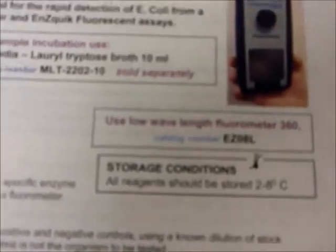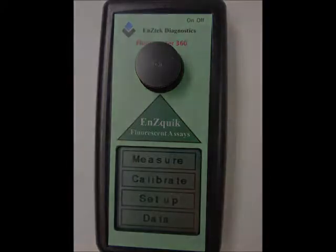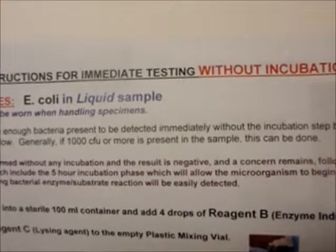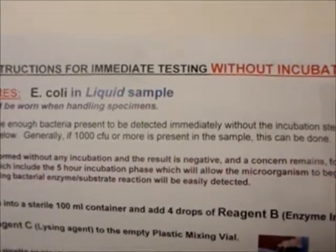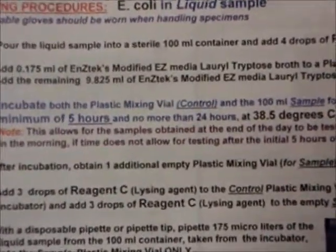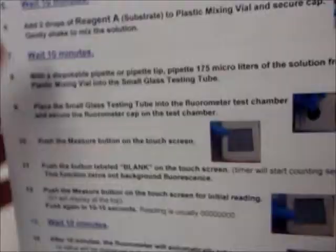The testing performed in this video will not contain any incubation steps and is intended for situations where the user does not need to detect low levels of bacteria. The rule of thumb is, if you need to detect less than 1,000 CFU, then follow the normal instructions which contain the incubation steps. The normal incubation time required for the Enzatec assays is only a short additional 5 hours.